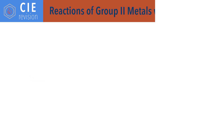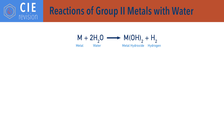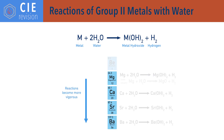Group 2 metals react with water to form group 2 metal hydroxides, with a general reaction of metal plus water to metal hydroxide: M + 2H₂O → M(OH)₂ + H₂. As the group 2 metals become more reactive going down the group, the metals react more readily with water and the reactions become more vigorous.